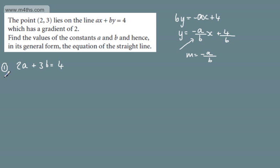The gradient is going to be minus a over b. Therefore, what we can do with equation 2 is write now that minus a over b will be equal to 2. Now, we could rearrange this and write equation 2 as minus a over 2 is equal to b.